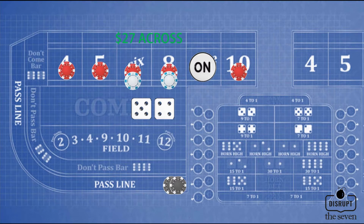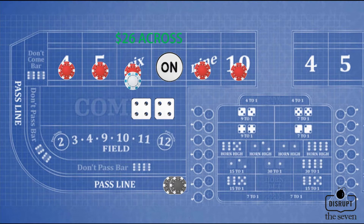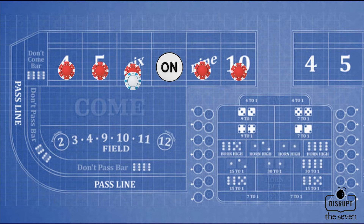That means $5 on the 4, 5, 10 and $6 on the 6 and 8. We're only doing the minimum since the table is $5. If the shooter had rolled a different number — let's say he rolled an 8 — we'll tell the dealer $26 across. We want to have a unit working on each number except the come out number. The idea of the Hit and Run is to have a bet on the main numbers to maximize profit, then immediately collect but not press. We do that for two additional rolls regardless of outcome. After the third roll, we tell the dealer to turn off our bets.